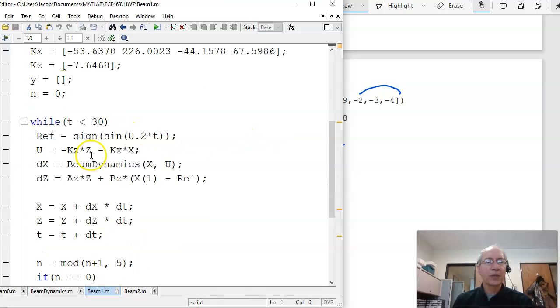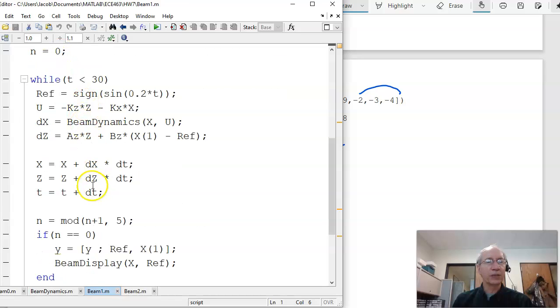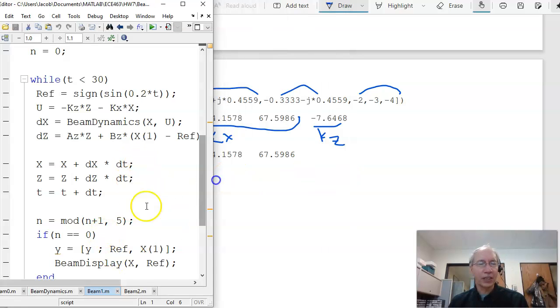The last one is kz. So if I try it, plug those gains into my simulation, which looks like this, beam 1. I now added a dummy state, my servo compensator. I've got my feedback gains. Kx, the ones I just calculated, kz. My control now is minus kz times e, minus kx times x. Once I know u, plug it into the dynamics to find the acceleration. I now have the servo states. az is 0, bz is 1. dz is just the difference between the setpoint, the output and the setpoint. Integrate x, integrate z, and repeat.